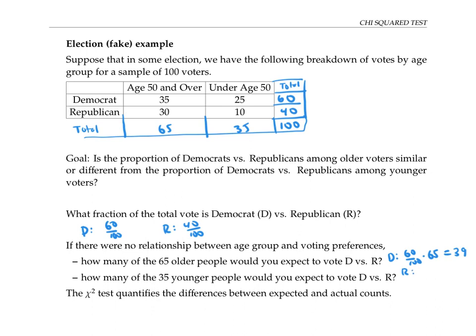Similarly, for older voters voting Republican, we'd expect 40% of them. So 40 over 100 times the 65 older voters gives us 26 voters. As a reality check, let's note that these two numbers, 39 and 26, still add up to the 65 voters.